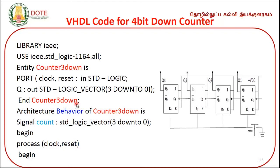After entity declaration, we write the architecture body: architecture behavior of counter3_down is. Then we declare the signal: signal count: std_logic_vector(3 downto 0); with a semicolon.